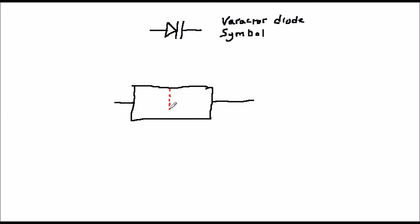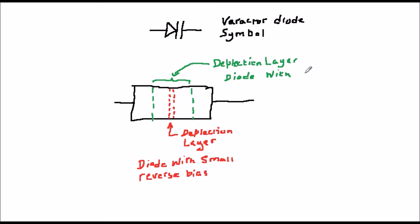The Varactor diode, also called the VeriCap, is a diode in reverse bias which is used as a voltage-controlled capacitor. Because the width of the depletion layer depends on the reverse voltage across the diode, and the depletion layer itself acts like an insulator, the diode looks like a capacitor when it is in reverse bias.